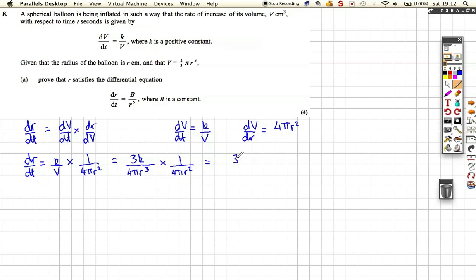Which, if we put all these bits together, we get 3k on top, on the bottom we get 16 pi squared, pi times pi, and then we get r to the power 5. Now that looks very similar to what we want. We want b over r to the power 5. Well, we can rewrite that as b over r to the power 5, because we can say the 3k and the 16 pi squared, they're all numbers.